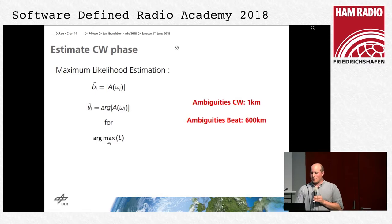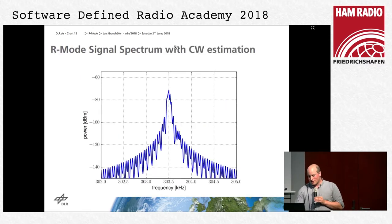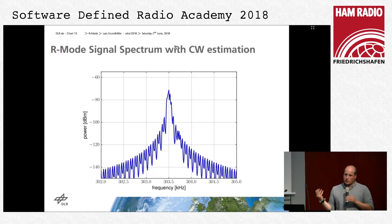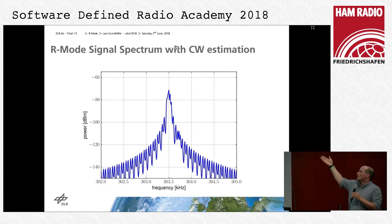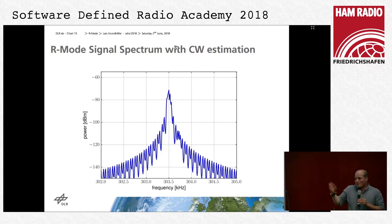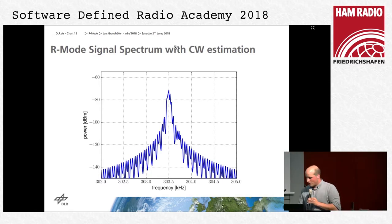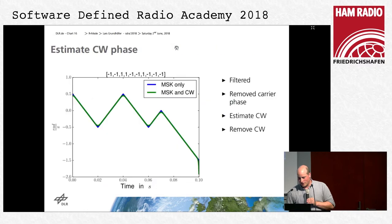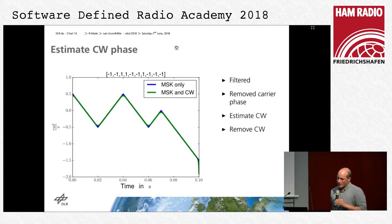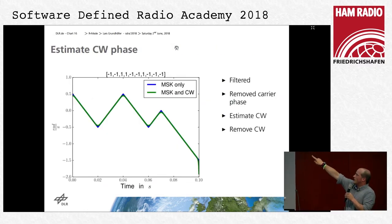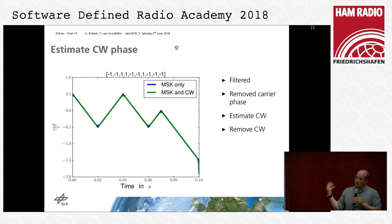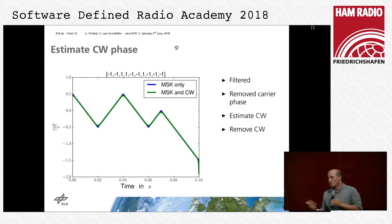I estimate this and subtract it from the simulated signal. You can see this works quite well in simulation — nothing significant is left over. When I apply the Hilbert transform again, there are only slight ringing artifacts due to the filter, but everything else looks good in simulation.